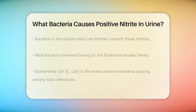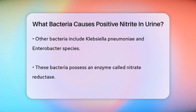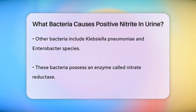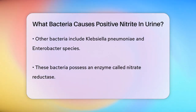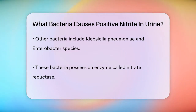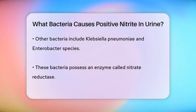These bacteria have an enzyme called nitrate reductase that helps them convert nitrates into nitrites. For example, E. coli is one of the most prevalent bacteria causing urinary tract infections. When E. coli is present in the urinary tract, it uses its nitrate reductase enzyme to convert the nitrates from your diet into nitrites.